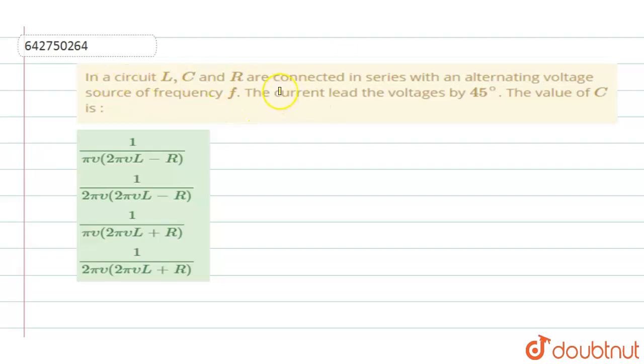In a circuit, L, C and R are connected in series with an alternating voltage source of frequency F. The current lead the voltage by 45 degrees, the value of C is.